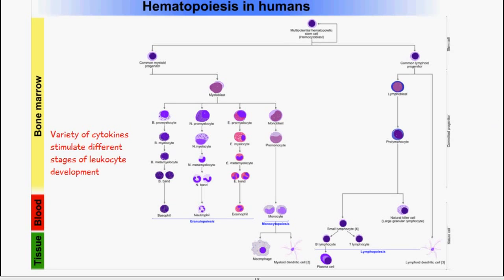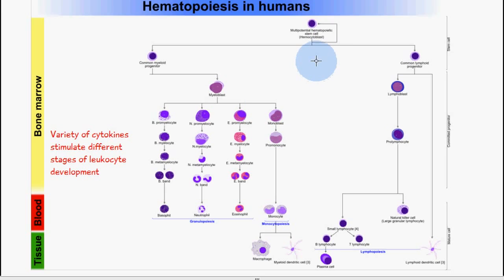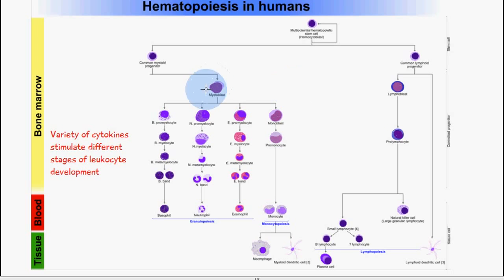We're going to look at the generation of white blood cells beginning from a hemocytoblast. This is the first multipotent hematopoietic stem cell, which initiates the production of not only white blood cells but also red blood cells and thrombocytes. The location of the hemocytoblast is in the bone marrow, and in this video we're just going to focus on the production of white blood cells.